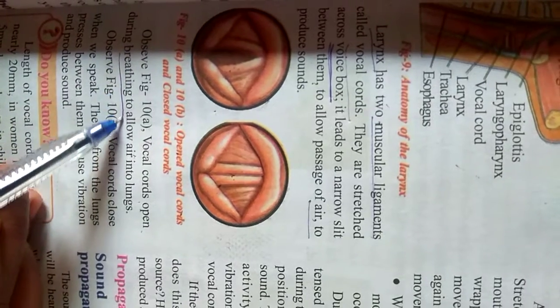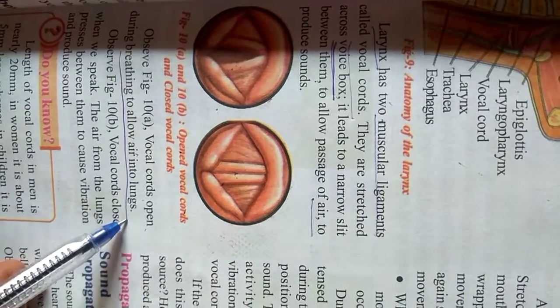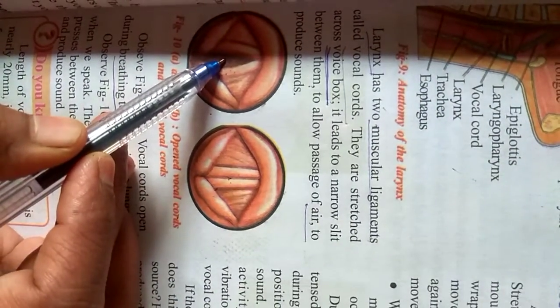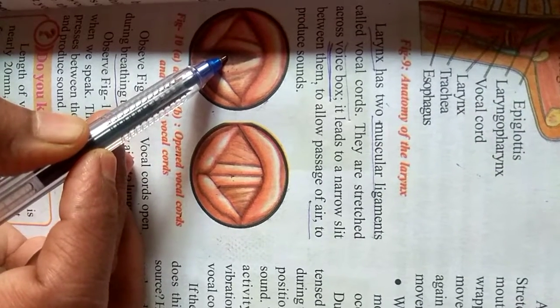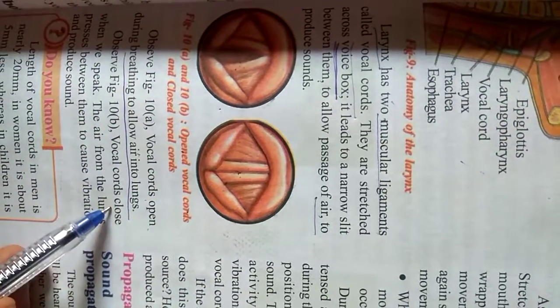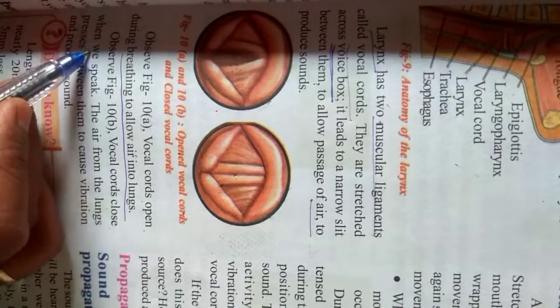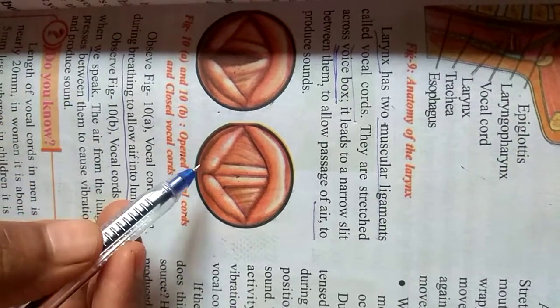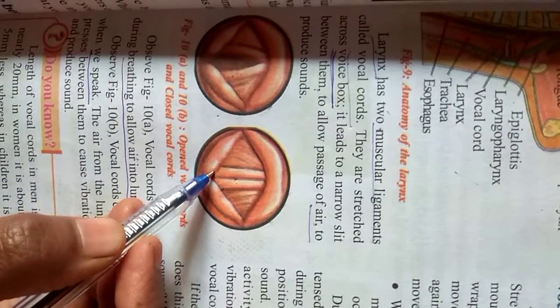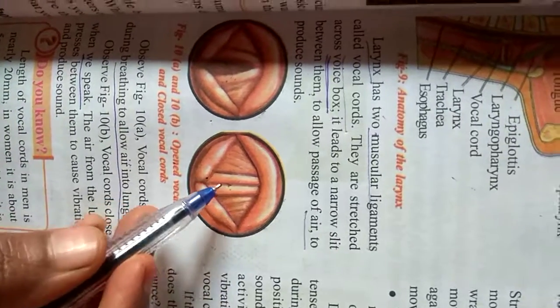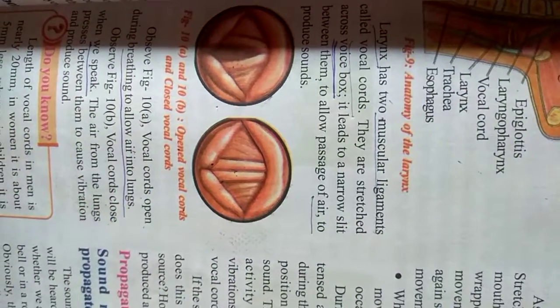See here, vocal cords open during breathing to allow air into the lungs. From this, the air enters inside the lungs. Vocal cords close when we speak. When we are speaking, air is not entering inside. It is closed, and we can speak.